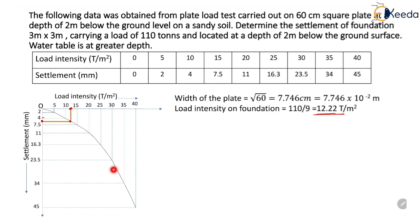This point represents the settlement of the plate, which equals 6mm. Settlement of the plate at load intensity of 12.22 tons per square meter is 6mm.